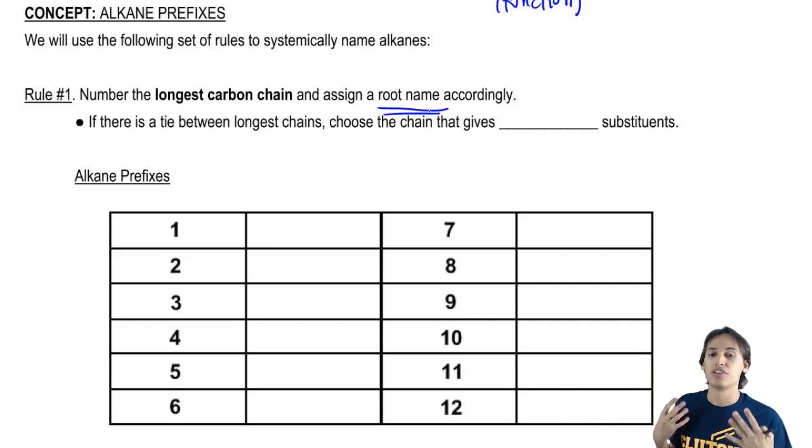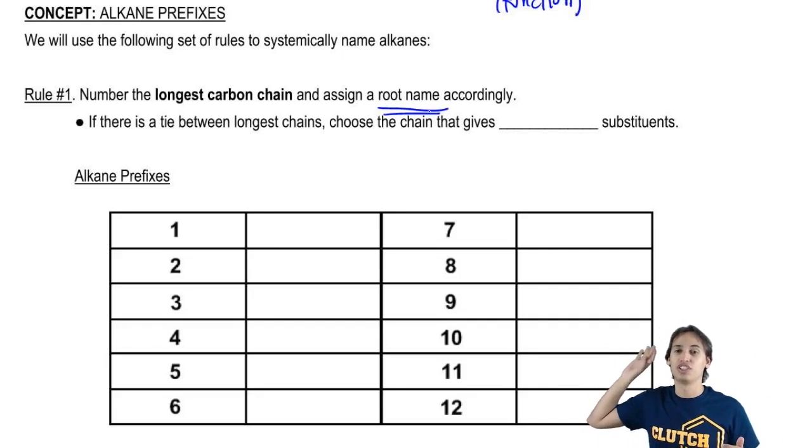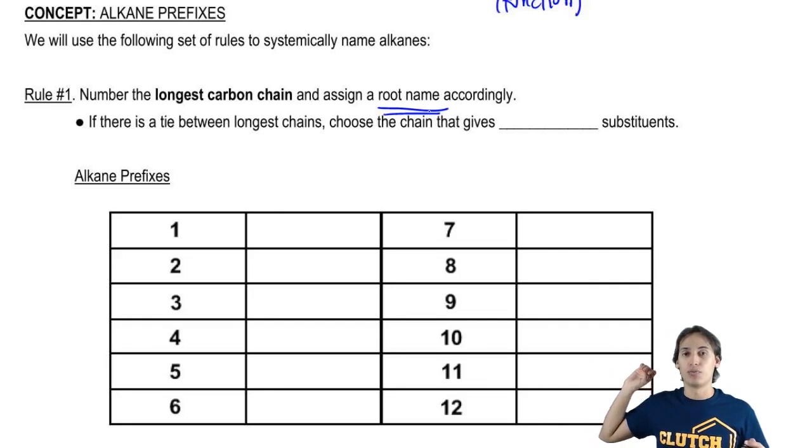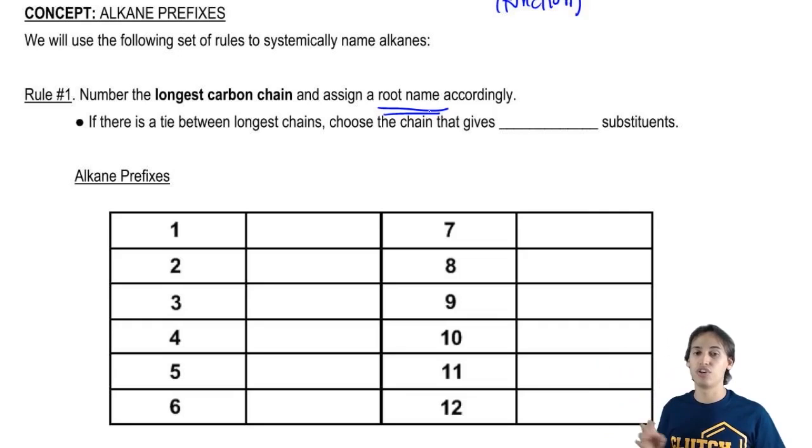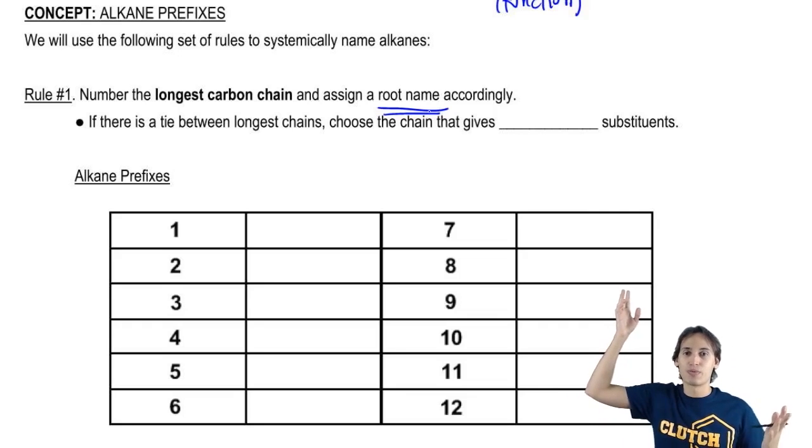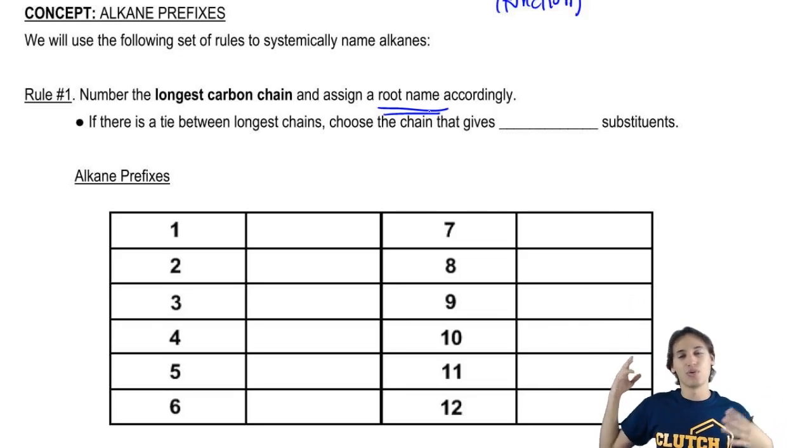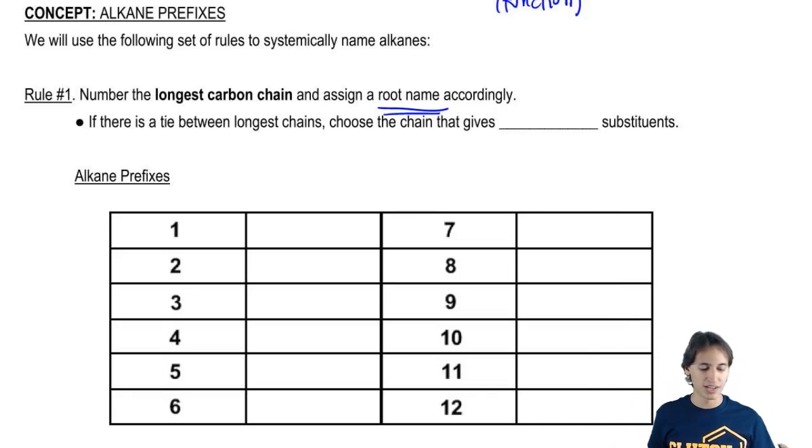I just want to look at this chart here. This chart is going to be your cheat sheet for the different root names or parent names that you need to know. Now, some professors don't require you to know all the way up to 12. Some professors will have you end at 8, some professors have you end at 10, so it's up to your professor. I'm just doing 12 just to be thorough just in case your professor wants you to know all 12. So let's go ahead and do these one at a time.